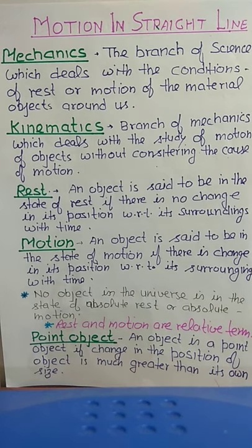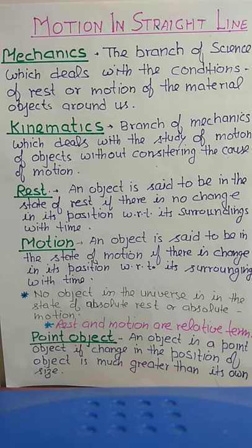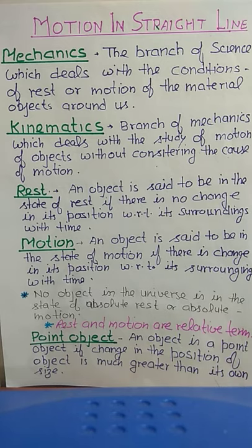Is a bus a point object? A bus is very large. But if the bus travels only 10 meters, then with respect to that 10 meter reference, the bus is large and big. However, if this same bus travels 700 or 800 kilometers, then with respect to the distance traveled, the size of the bus is very small. In this condition we can consider the bus as a point object.